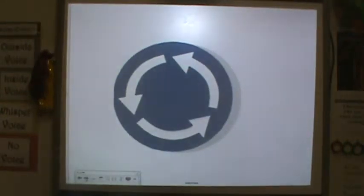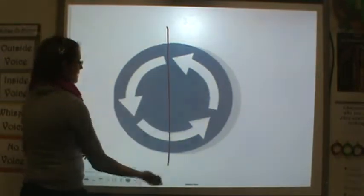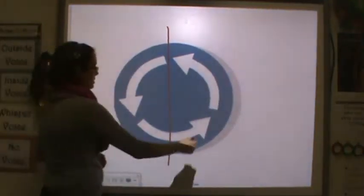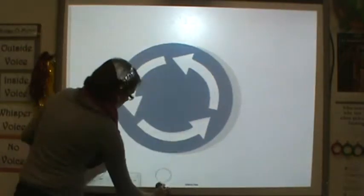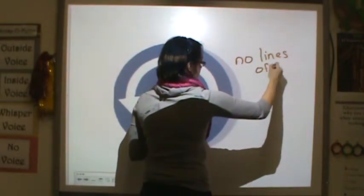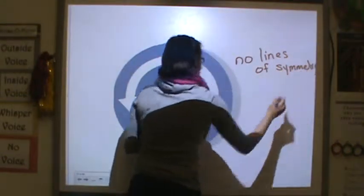So, let's look at this shape. Let's think, does this have a line of symmetry anywhere? If I were to cut it here, if I were to fold it in half, the arrows wouldn't work, would they? So this has no lines of symmetry. It wouldn't work.